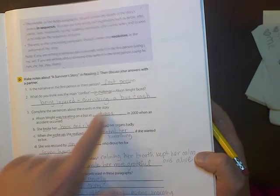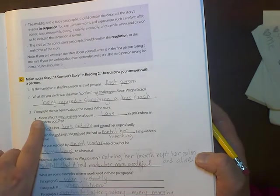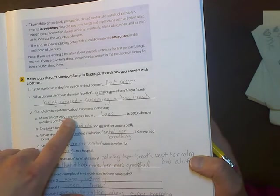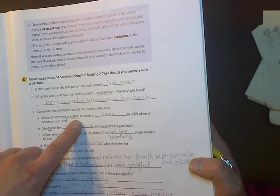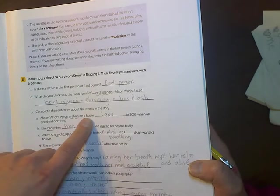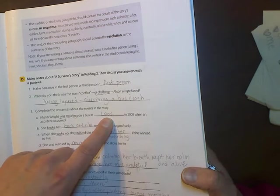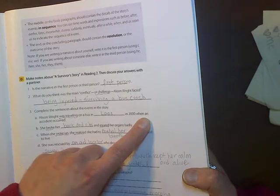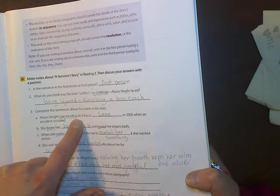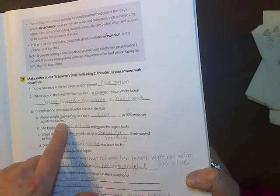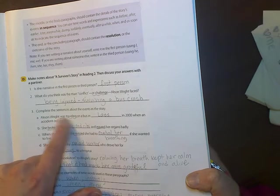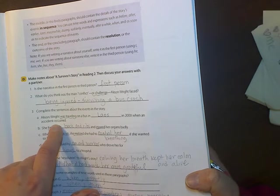Complete the sentences about the events in the story. A. Alison Wright was traveling, notice the past progressive there, was traveling on a bus in Laos in 2000 when an accident occurred. So she was traveling when something happened to her. That's why we have past progressive and simple past. The accident interrupted her traveling.